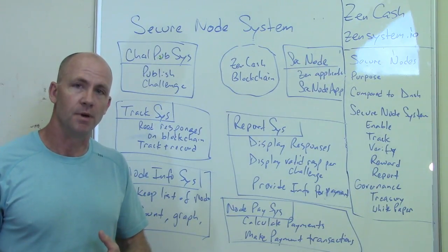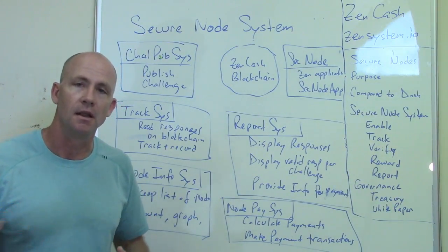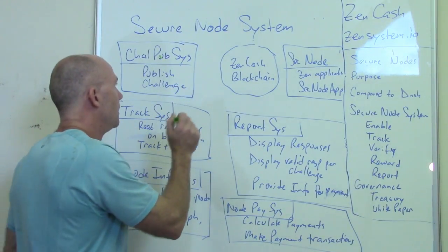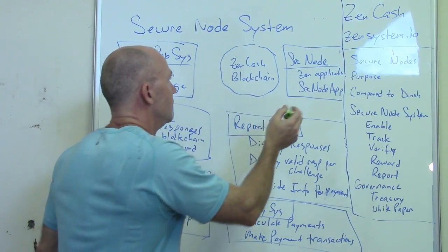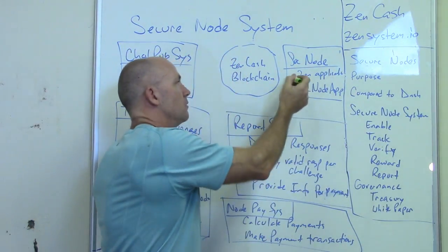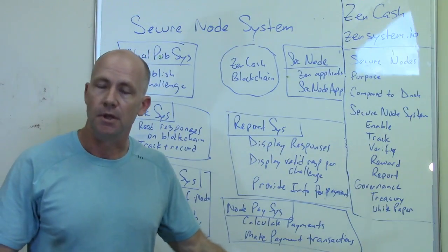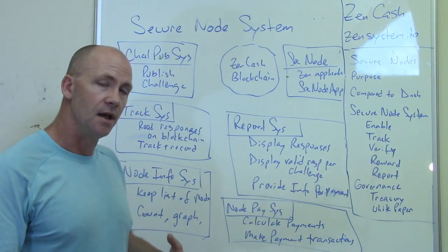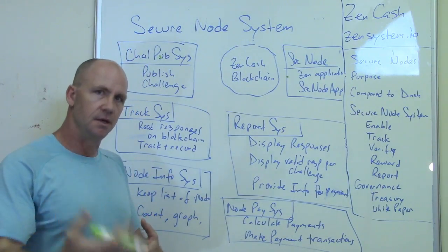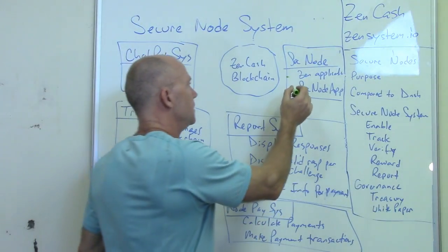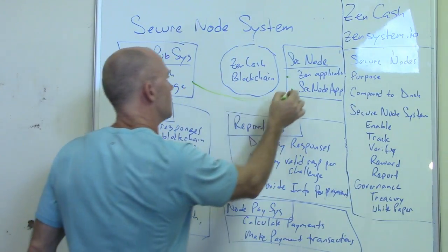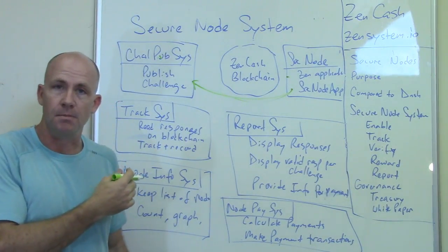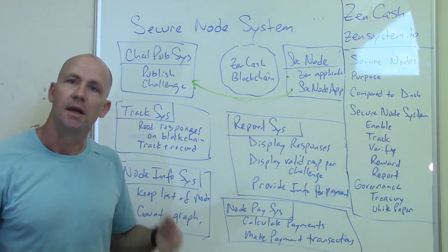We'll publish a challenge — initially on a server where nodes read it using JSON or a web page. There are a few different ways to publish the challenge: first in a centralized manner, and in the future in a more distributed manner. A challenge is published and the secure nodes run the regular Zen application with OpenSSL, and also the secure node application itself — a Python script that does a bunch of different things — which continuously looks to the challenge publishing system for challenges.